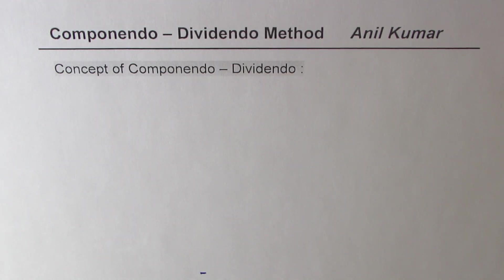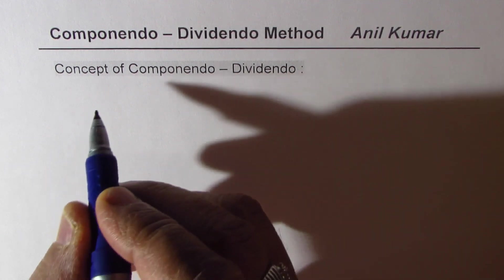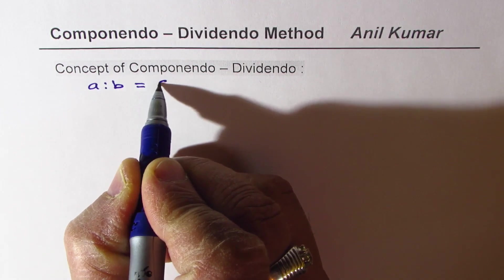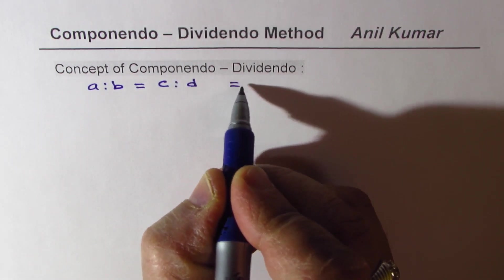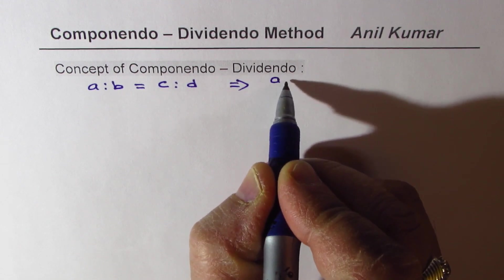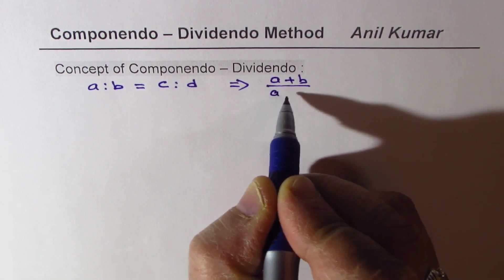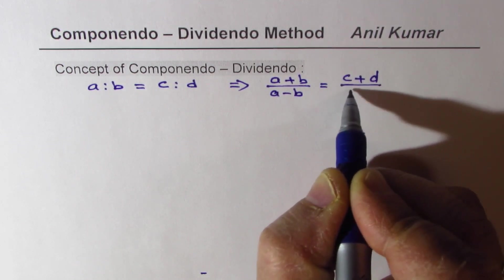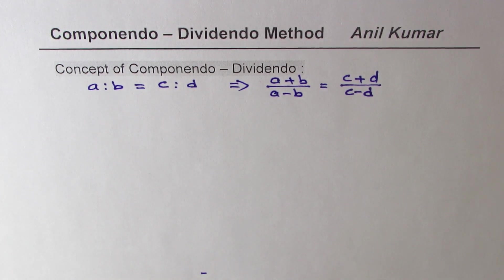Componendo Dividendo Method. This is a remarkable technique which will help you solve most of the challenging questions on ratios and proportions. If a is to b equals to c is to d, then we can always write this as a plus b over a minus b equals to c plus d over c minus d. That is the method which we are going to prove and apply in some questions.